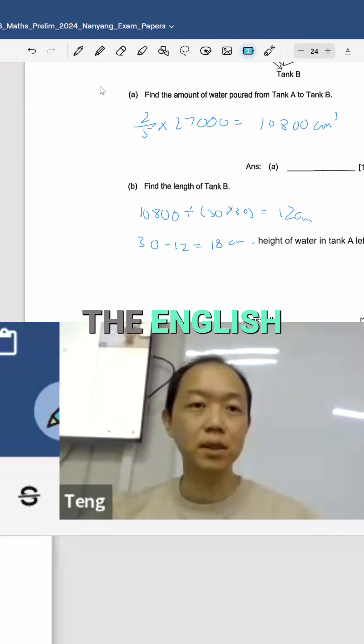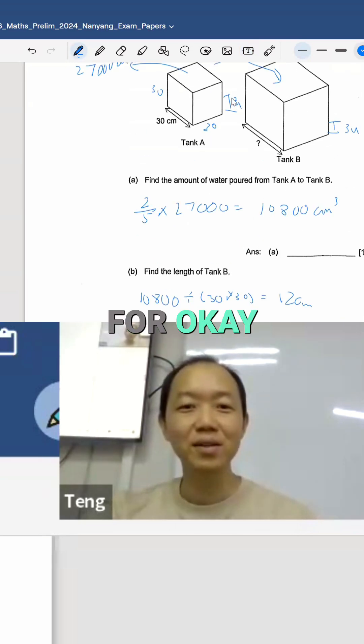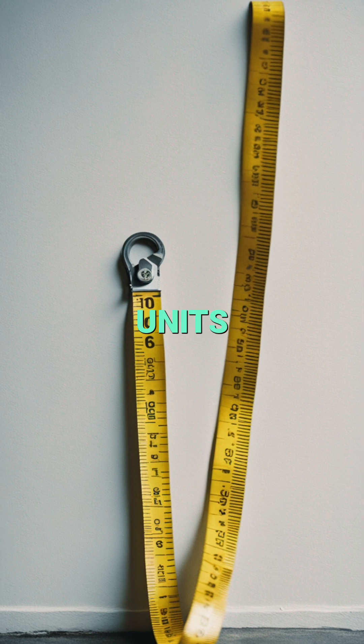You get the idea. Height of water in tank A after water was poured, okay? So 18 cm is 8 units. What is 3 units?